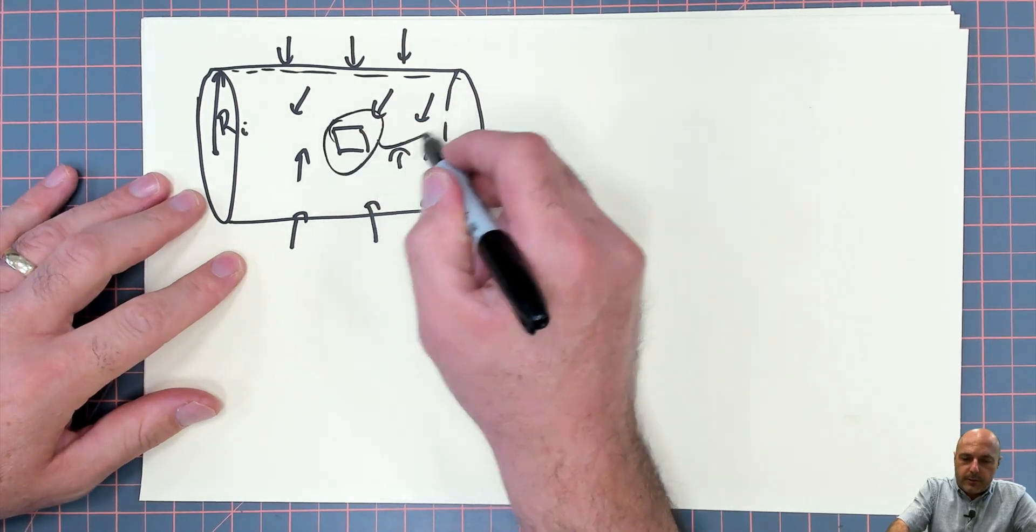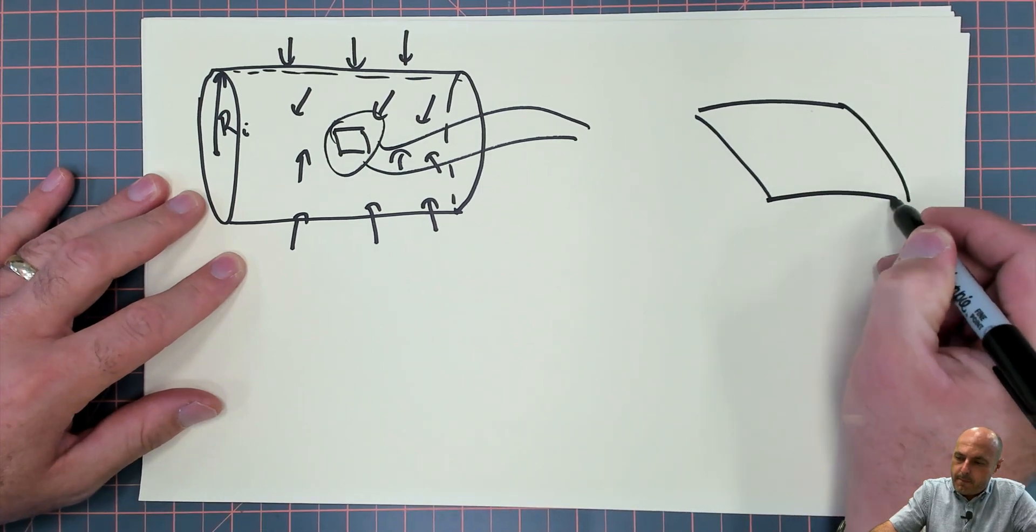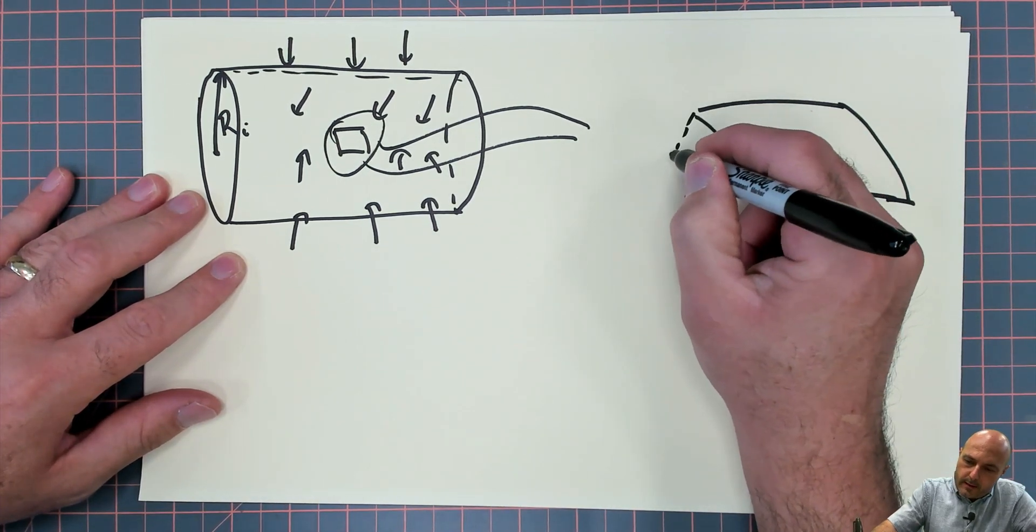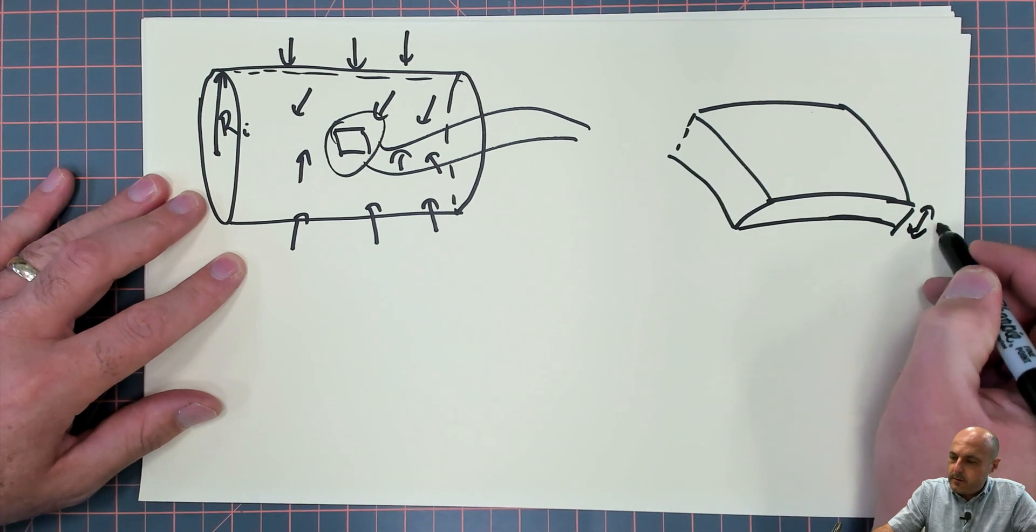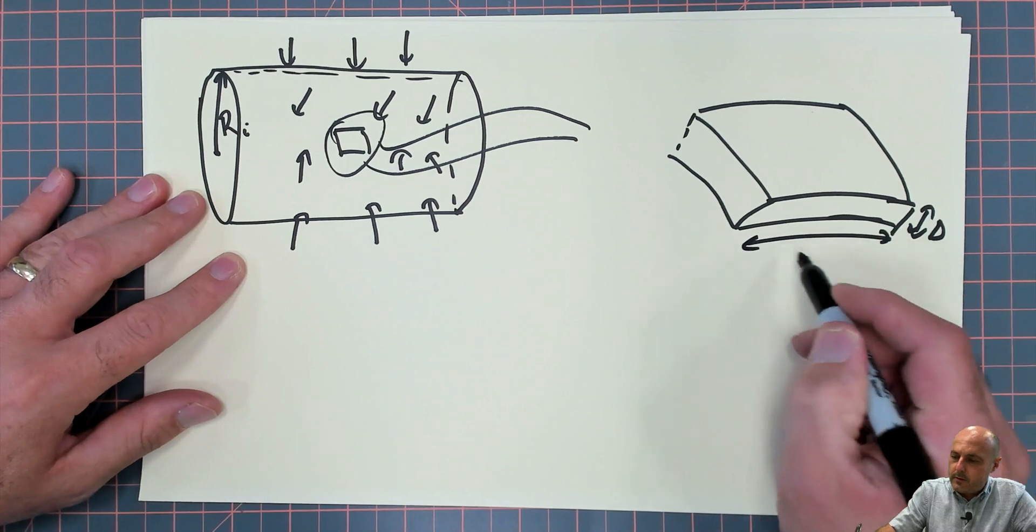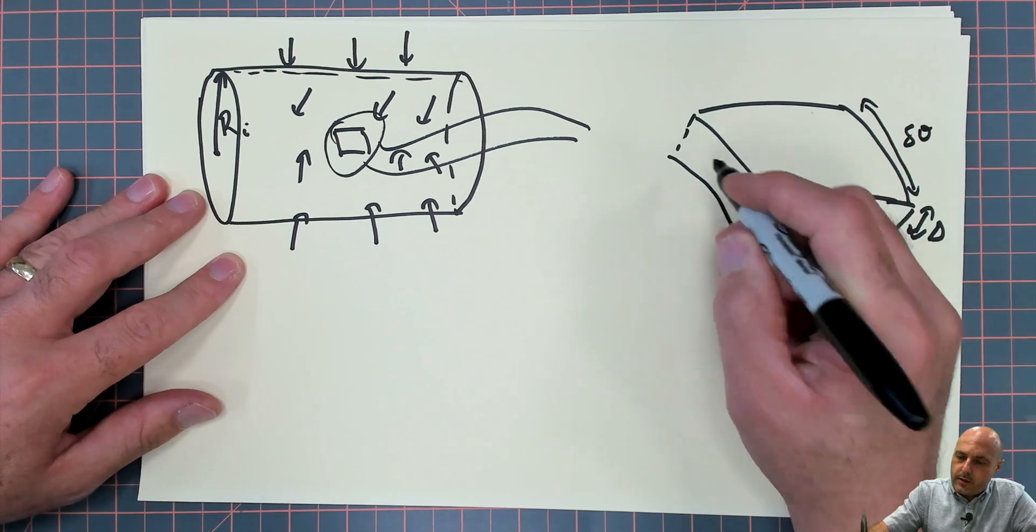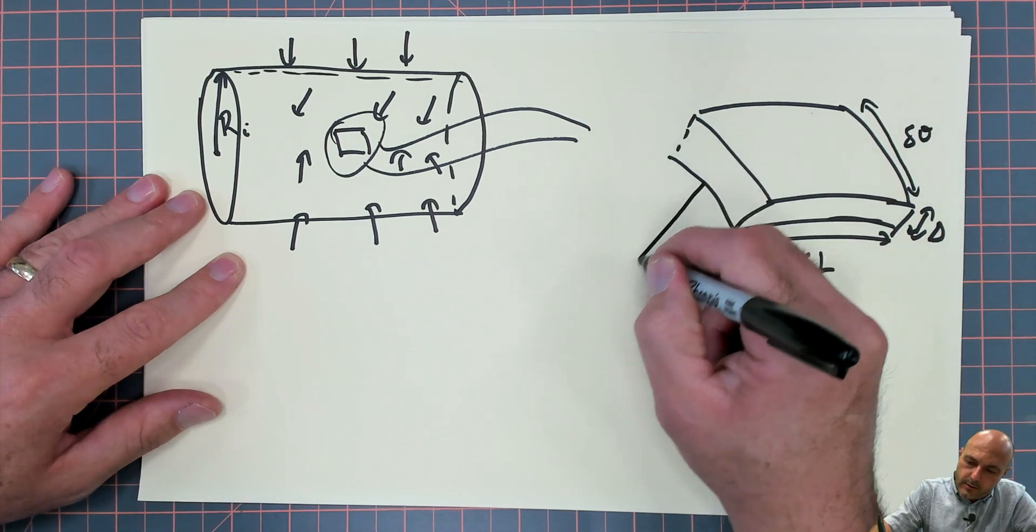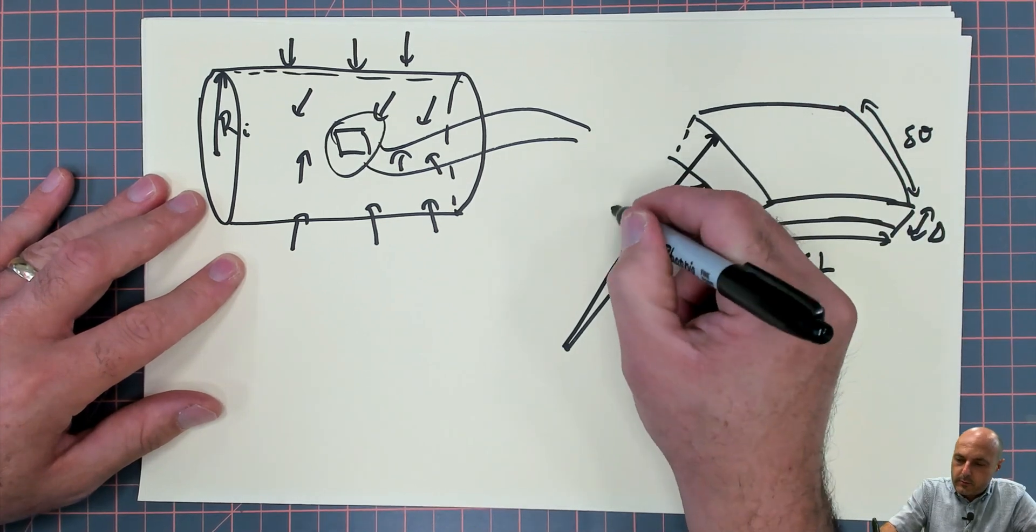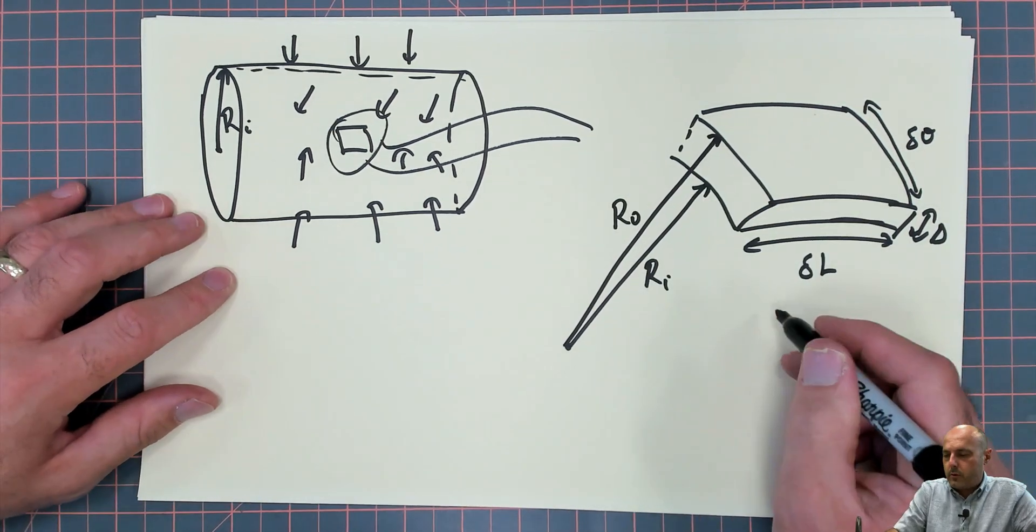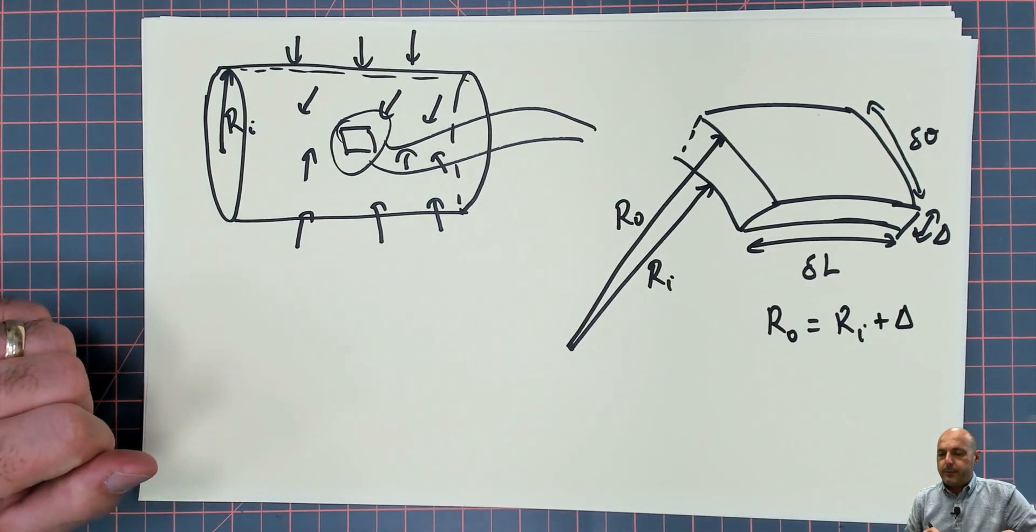We're going to take a differential element. Let's blow that up a little bit. And it has a thickness delta. Thickness delta. This would be lengthwise, delta L. And this would be anglewise, delta theta. And this is the inner radius, R inner. And this is the outer radius, R out. So we know also that R out is R in plus delta.